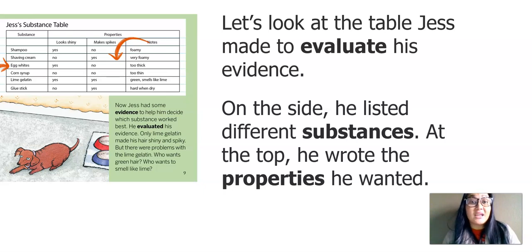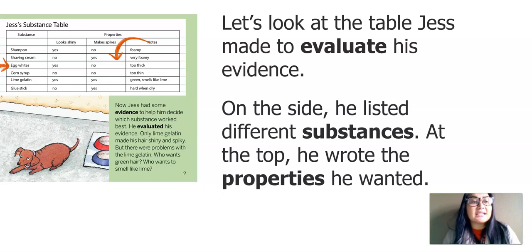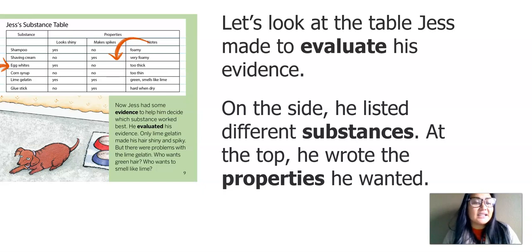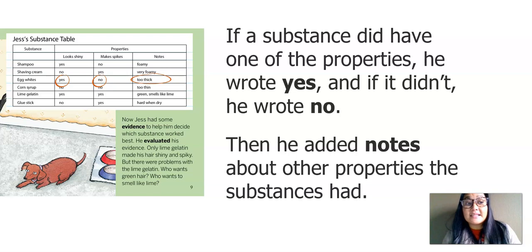Let's look at the table Jess made to evaluate his evidence. This is from the book Jess Makes Hair Gel. On the side, he listed different substances. At the top, he wrote the properties he wanted. One of the properties he tested was to look shiny and make spikes, and one of the substances he tested were egg whites. If a substance did have one of those properties, he wrote yes, and if it didn't, he wrote no.